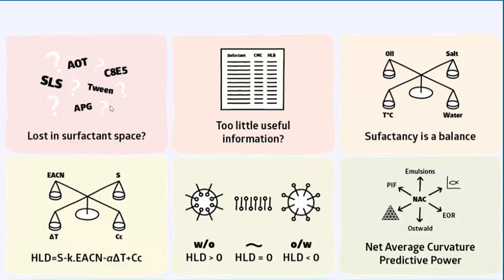There's no shortage of information out there. There are books with whole lists of surfactants. Manufacturers will provide you with tables of their surfactants and they'll tell you that a given surfactant is a great emulsifier, which is actually meaningless. And they might give you CMC values, which aren't of much use, and HLB values, which are just plain wrong. So there's too little useful information out there.